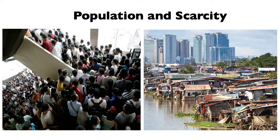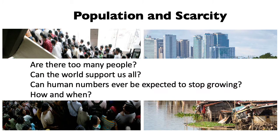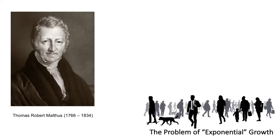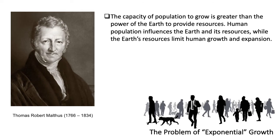Many explorations of the relationships between environment and society typically start with this scenario, asking basic questions about population. The concept of overpopulation is no longer new. Dr. Thomas Robert Malthus asserted that, given the procreative capacity of humanity and the inherently finite availability of the Earth's resources, human population is the single greatest influence on the status of the Earth and its resources. On the other hand, the Earth's resources provide the most definitive and powerful limit for human growth and expansion.